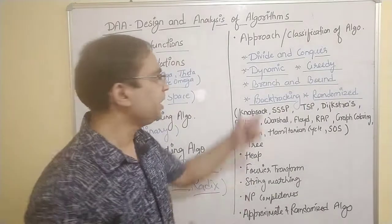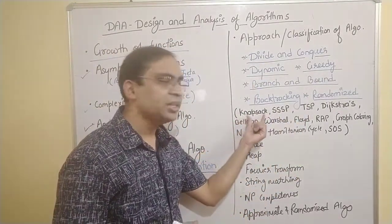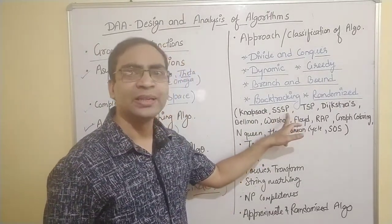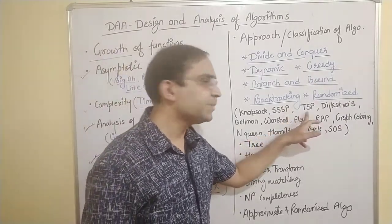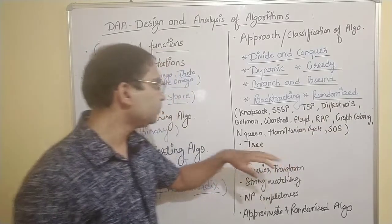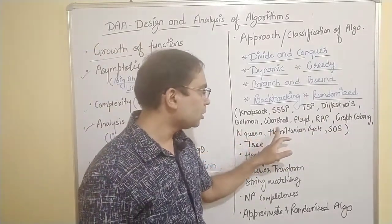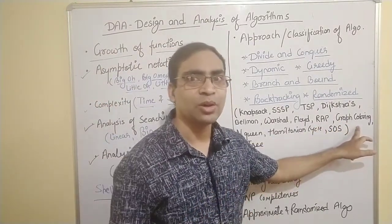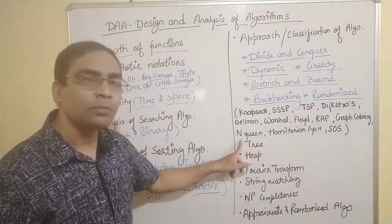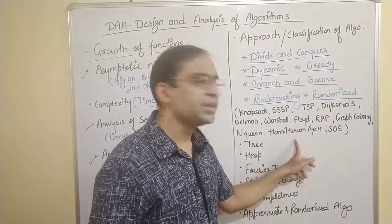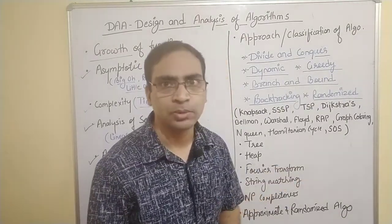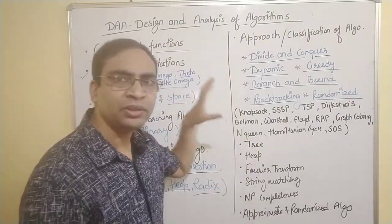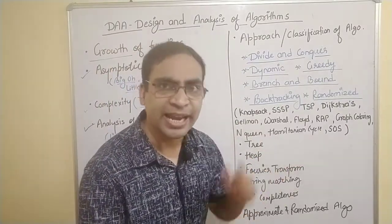We have lots of problems based on these approaches. A few are: the knapsack problem, the single-source shortest path problem, the travelling salesman problem, the Floyd-Warshall algorithm, resource allocation, the graph coloring problem, the N-queen problem, the Hamiltonian cycle problem, and subset sum problems. These are the problems based on these approaches, and we will be studying all of them in detail, and many more, in this DAA series.